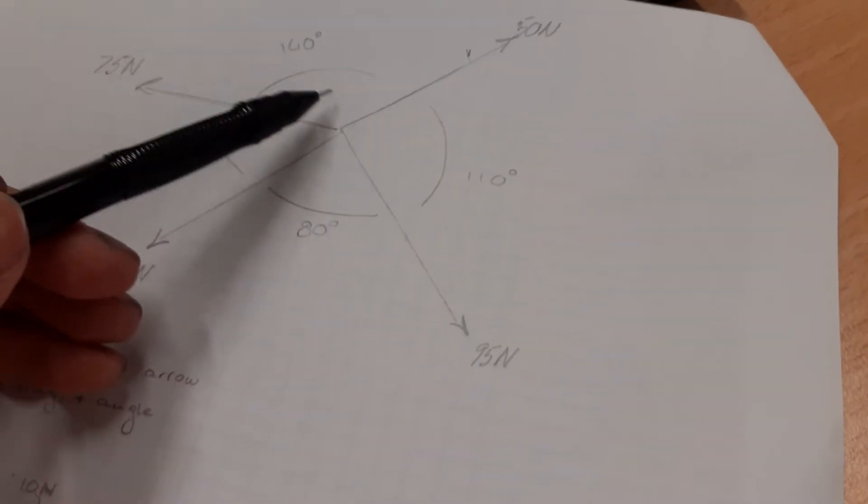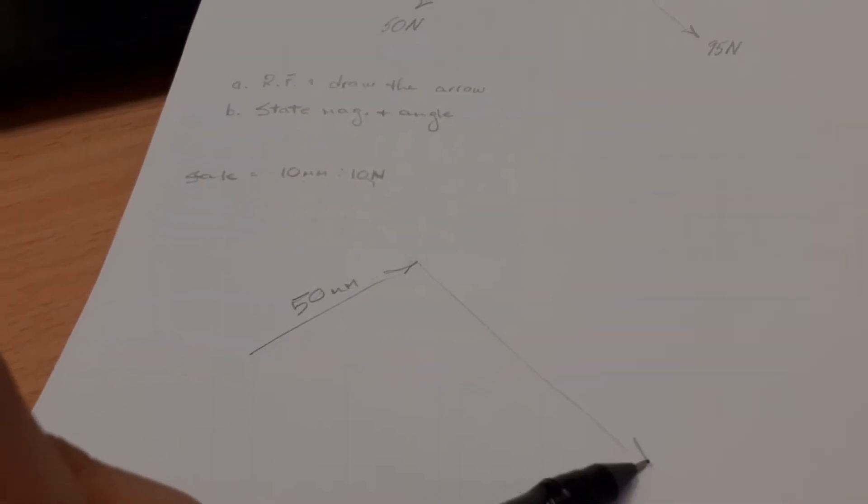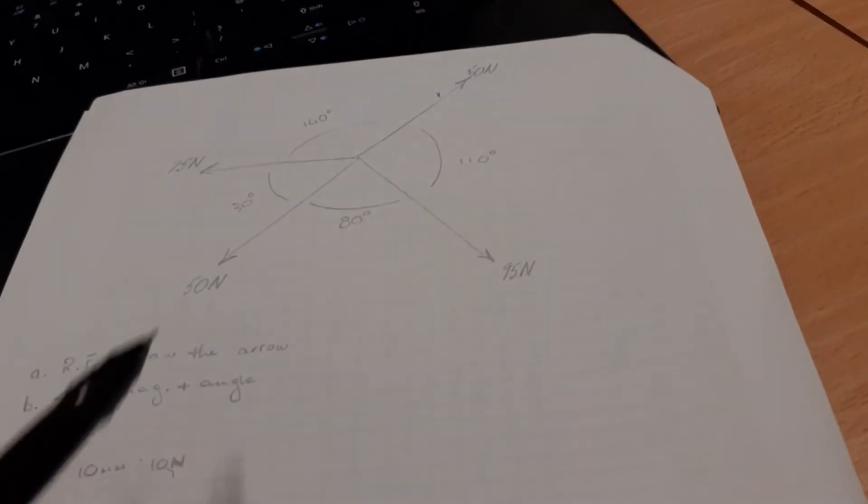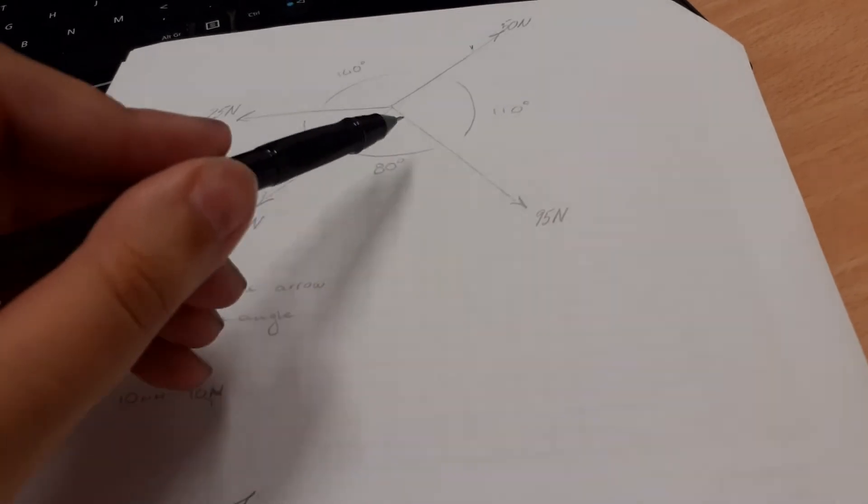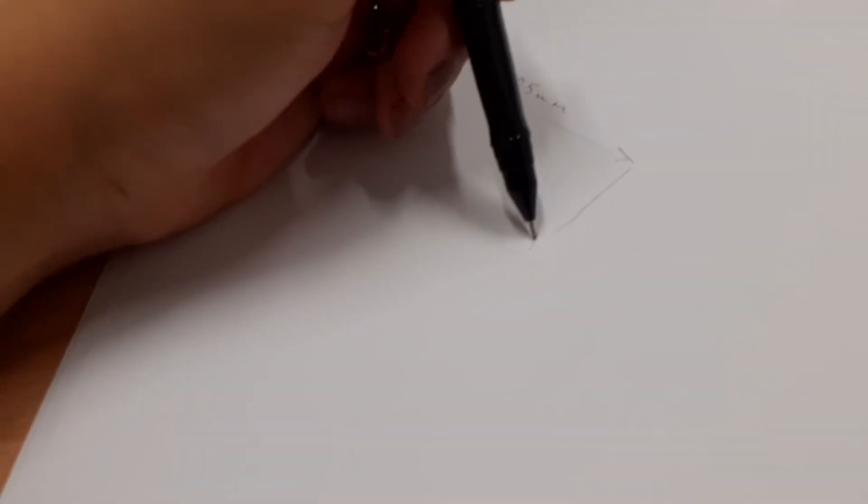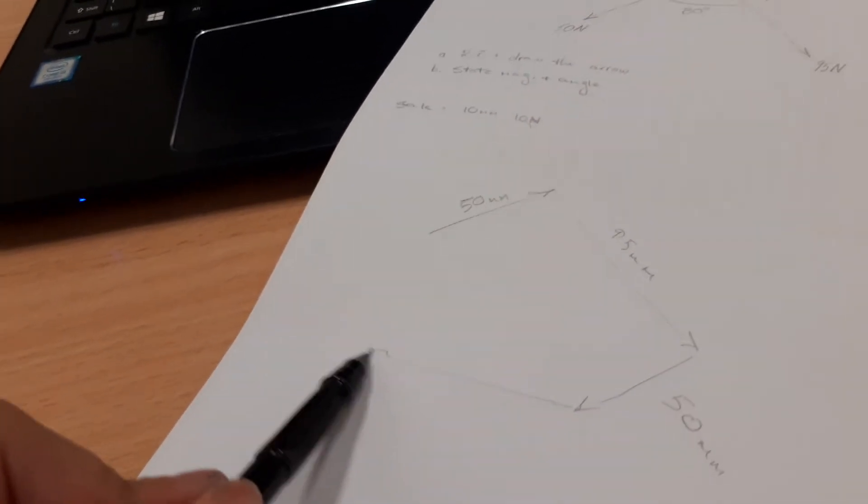The next arrow, the one right next to it, is this one. This one is 95 newtons, so he's going to draw a parallel line to this line from here and make it 95 millimeters. Next is this one, 50 millimeters. And then we have the final one, 75 newtons straight horizontally, so 75 millimeters there.